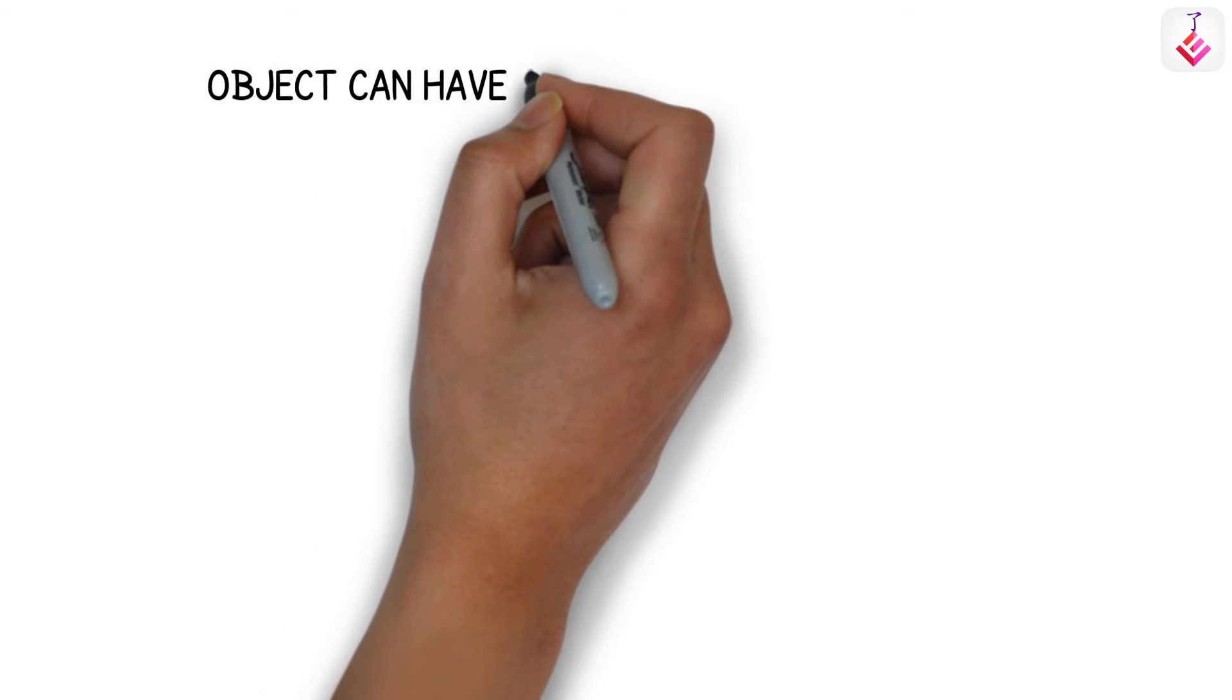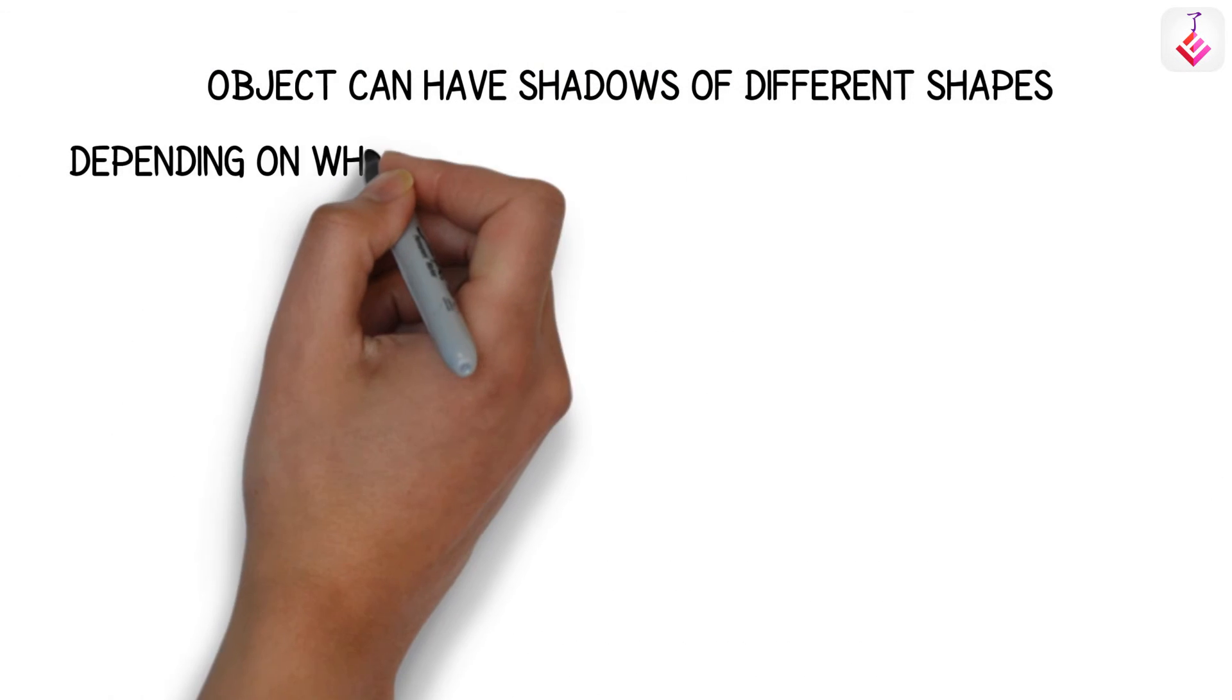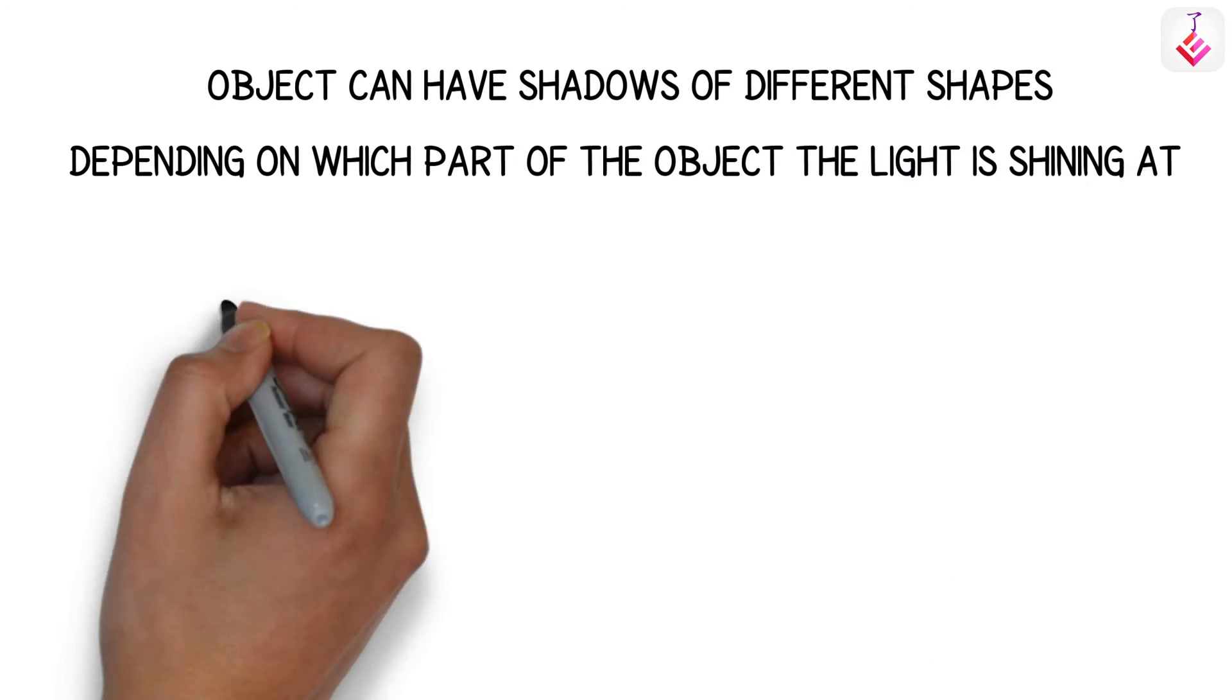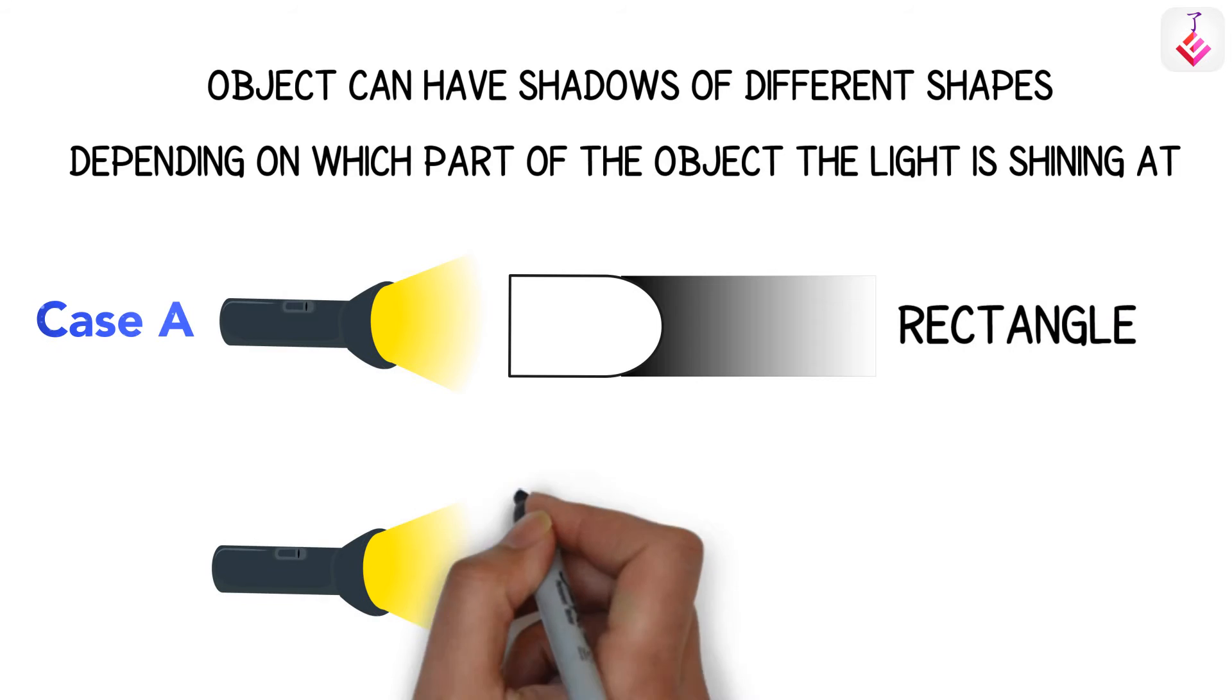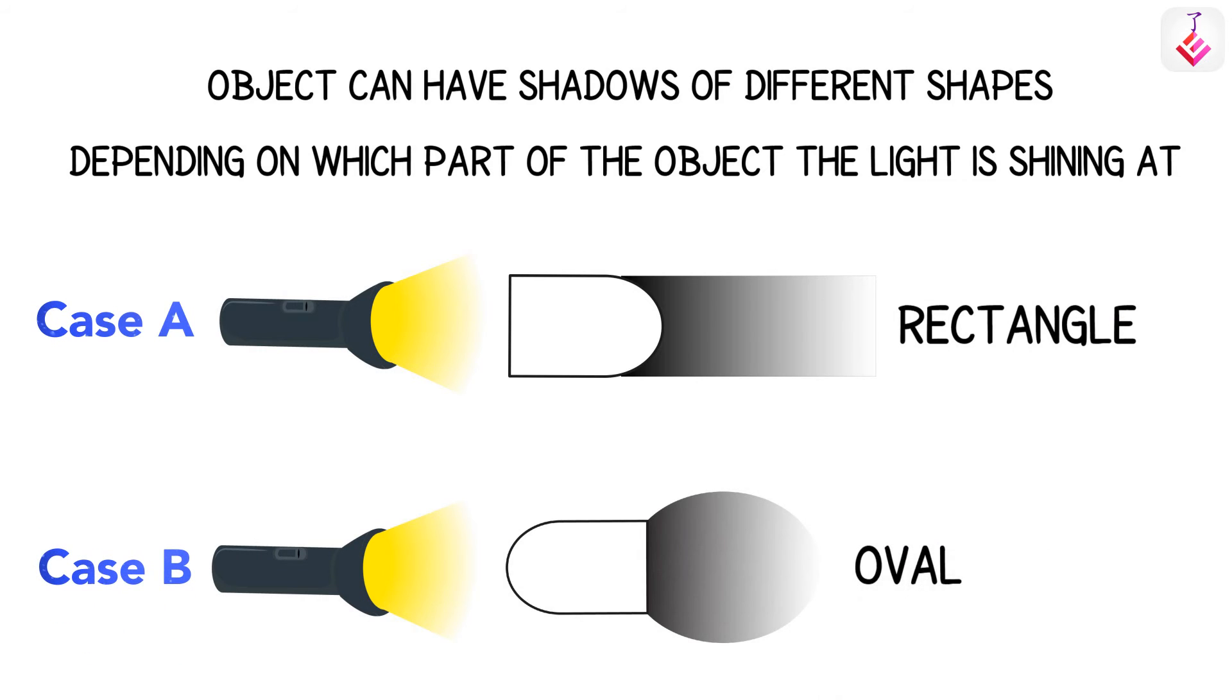An object can have shadows of different shapes depending on which part of the object the light is shining at. In one case, a shadow will be a square or rectangle, and in another case, the shadow will be in an oval shape. That's very interesting, isn't it?